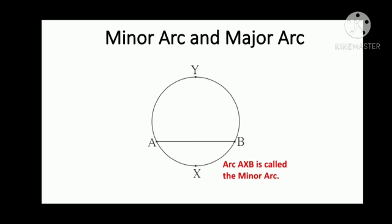Minor Arc and Major Arc. In the given figure, the chord AB divides the circle alongside into two parts. Of this, the arc AXB is the smaller and is called a minor arc, and arc AYB is a bigger arc and is called a major arc.